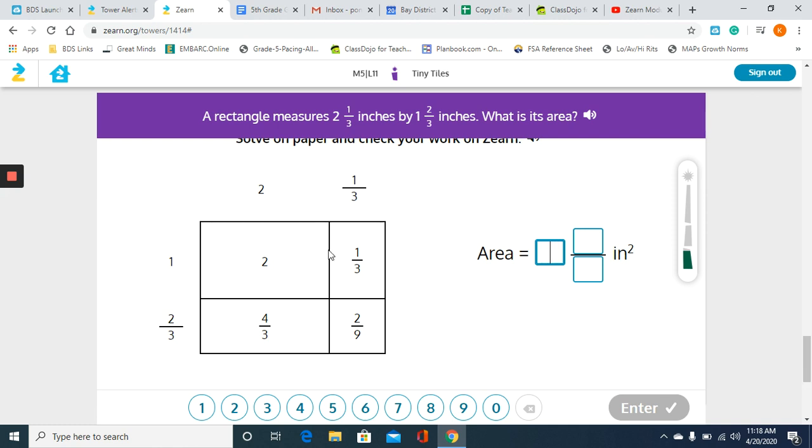So now they want you to solve for the actual area of the rectangle. We're going to add all of our partial products, which is what we have in our area model. Now I'm going to combine all of my partial products together. I'm going to start with my fractions. I'm going to add my like units, so 4/3 and 1/3, that gives me 5/3.